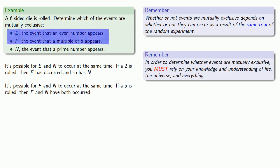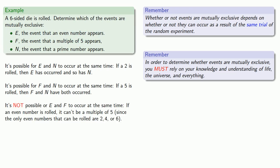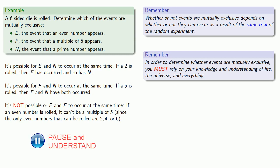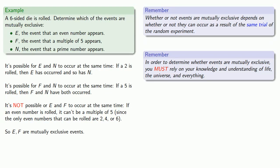But how about E and F? It's not possible for E and F to occur at the same time. If E occurs, an even number has been rolled, and it can't be a multiple of five. And here's where that knowledge of life, the universe, and everything is so important. If a six-sided die is rolled, the only even numbers that can be rolled are two, four, or six, none of which is a multiple of five. So since E and F can't occur at the same time, they are mutually exclusive events.